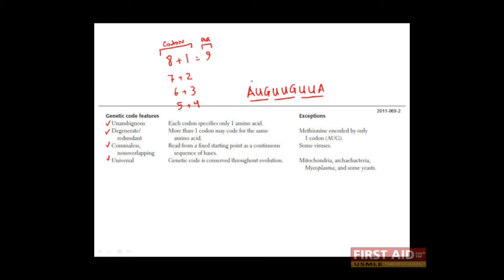A cell couldn't do this, for example. This, and then these three, and then these three. In other words, the genetic code is non-overlapping.